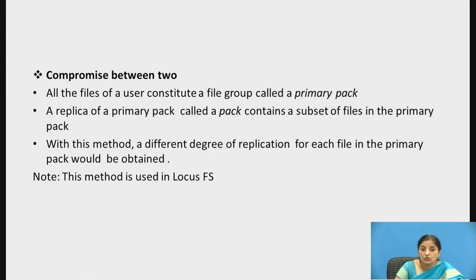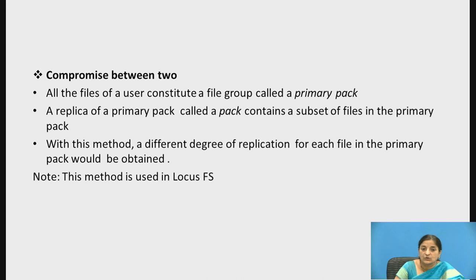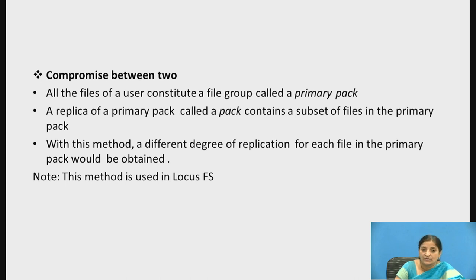A compromise between single file replication and volume replication is found as follows. All the files of a user constitute a file group called a primary pack. A replica of the primary pack, called a pack, contains only a subset of files in the primary pack — not all files. This method allows a different degree of replication for each file in the primary pack. Note: this method is used in the Locus file system.